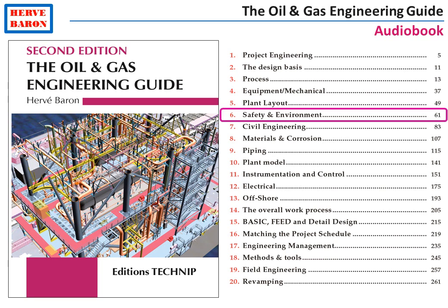Welcome to Chapter 6 of the Oil & Gas Engineering Audiobook. This chapter presents the work and the deliverables of the Safety and Environment Discipline. An oil and gas plant's safety is primarily ensured by reducing the likelihood and the consequences of leaks, of loss of containment. This is done by working in a number of areas such as detection and protection, which are listed by the Safety and Environment Engineer at the start of the job in the Safety Concept, also called the Safety Philosophy.